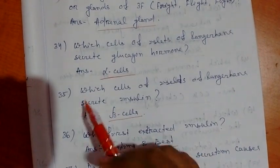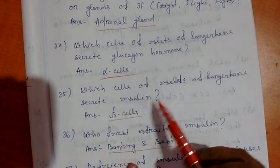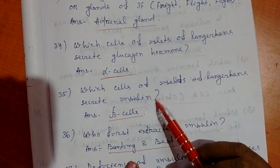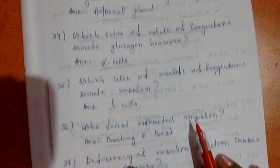Next, question number 35. Which cells of islets of Langerhans secrete insulin? Answer is beta cells.